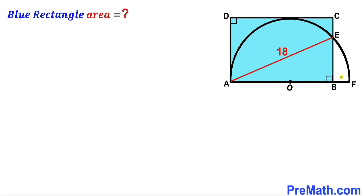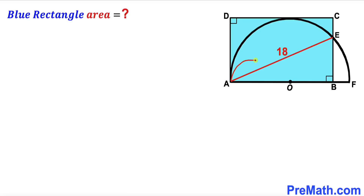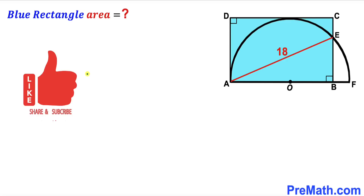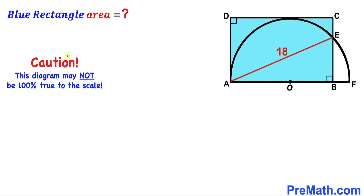Welcome to pre-math. In this video we have a semicircle with center O and a blue rectangle ABCD such that side length CD is tangent to the semicircle. Segment AE is 18 units and our task is to calculate the area of the blue shaded rectangle ABCD. Please give a thumbs up and subscribe, and keep in mind that this figure may not be 100% true to scale.